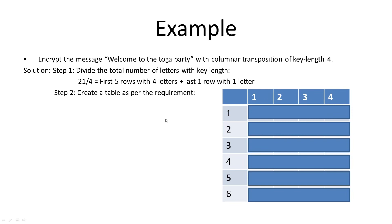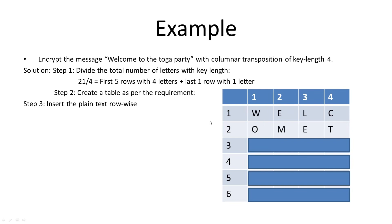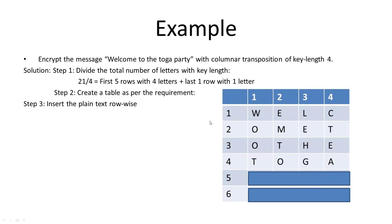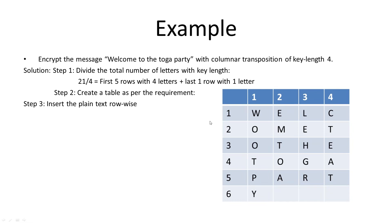Step three: insert the plaintext row-wise. So the first row gets four letters, the second row four letters, the third row four letters, the fourth row four letters, the fifth row four letters, and the final last row has only one letter. We have now entered the plaintext row-wise.